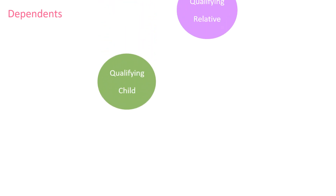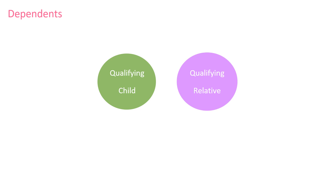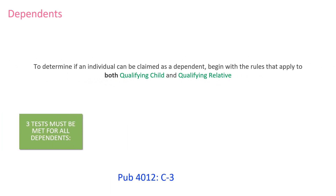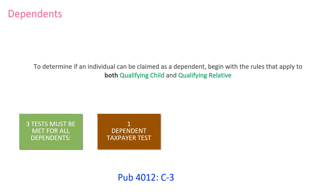There are two types of dependents: qualifying child and qualifying relative. Let's start with the rules that apply to both. There are three tests that must be met for all dependents. The dependent taxpayer test: a taxpayer who can be claimed as a dependent by someone else cannot claim anyone as a dependent on his or her tax return. Part one of the intake and interview sheet asks, can anyone claim you or your spouse on their tax return? If the answer is yes, they cannot claim a dependent.